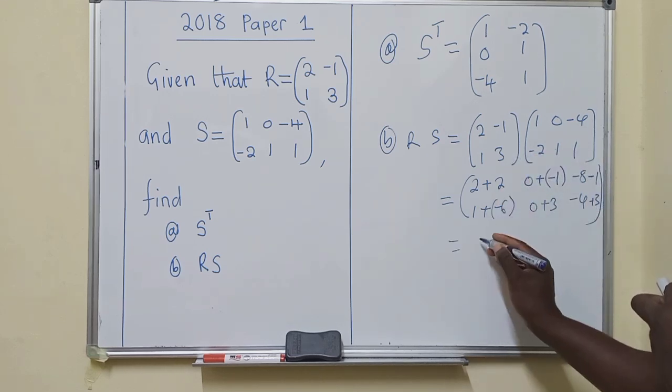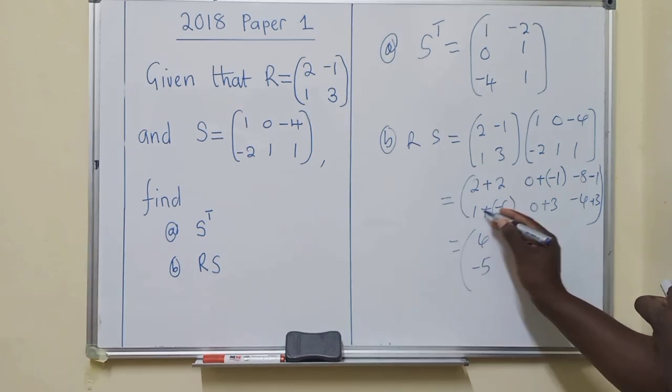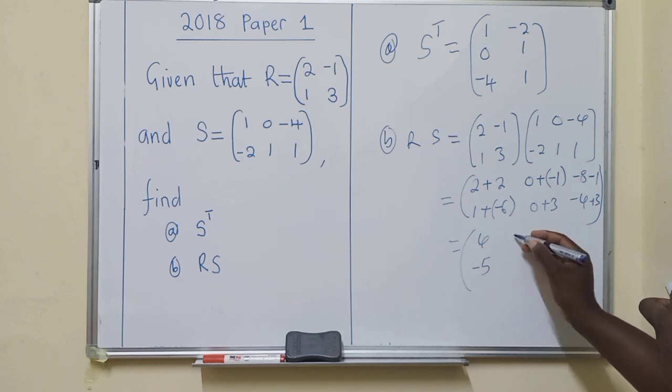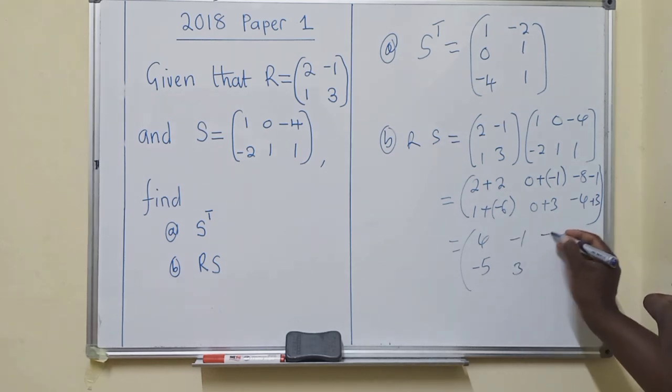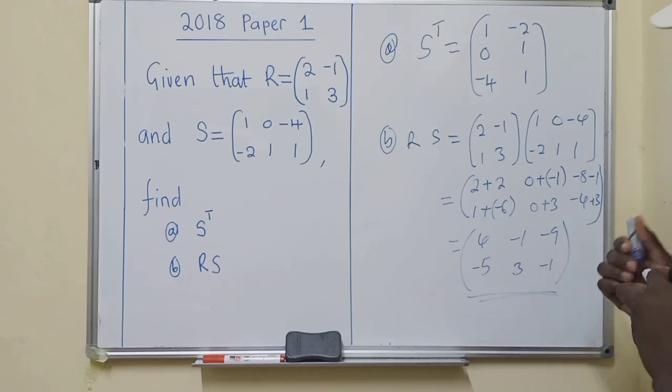So we simplify. Here we're getting a 4. Here we're getting a negative 5, because this and this, it will be negative. 1 minus 6 is minus 5. We have negative 1, we have a 3, negative 9 here. Here, negative 1, and this is our answer.